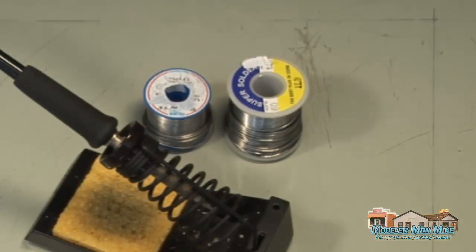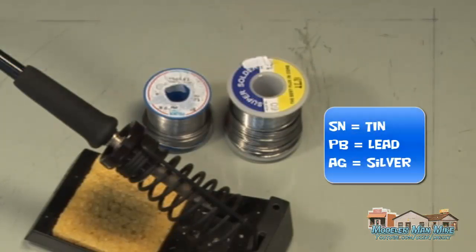So buying the right solder is important. You want to make sure that when you do that, you get the 60-40 mixes. And the mixes only pertain to the different types of solder.